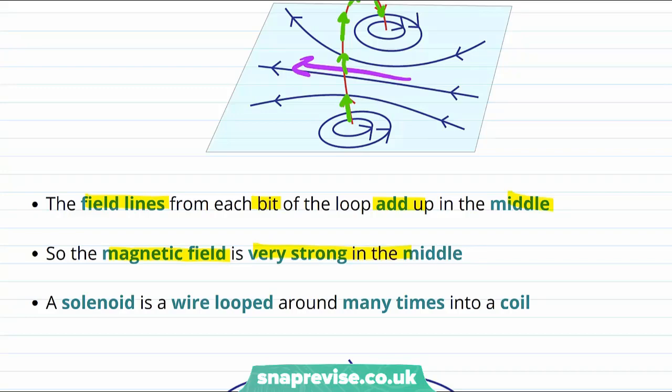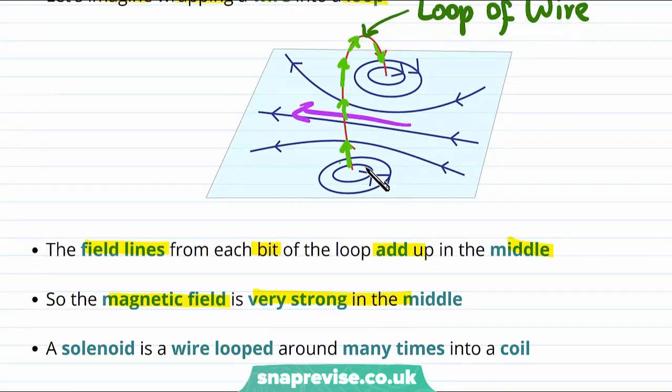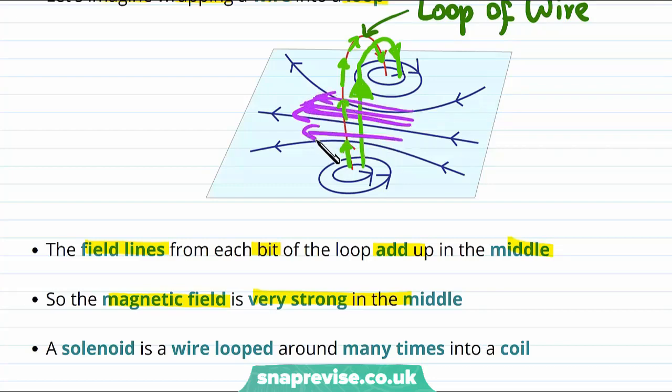But what if we wanted to make this field even stronger? Well we could put another loop right next to our current one. If we add another loop of current next to the one that we already have, where I've drawn on the arrows to show the direction of the current again, then we would have an even stronger magnetic field pointing in this direction in the center.